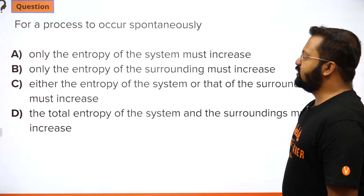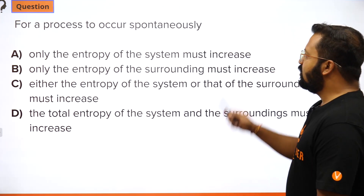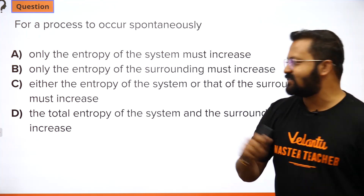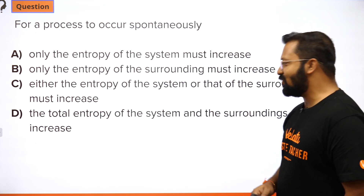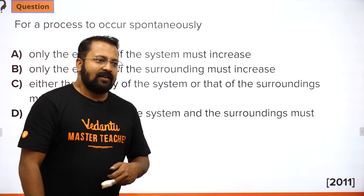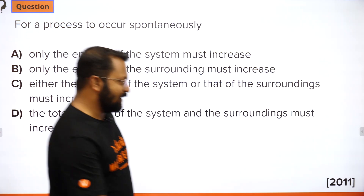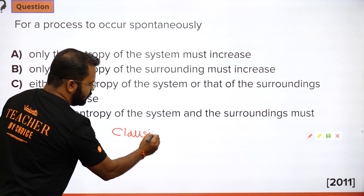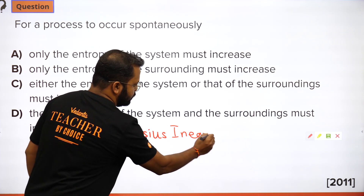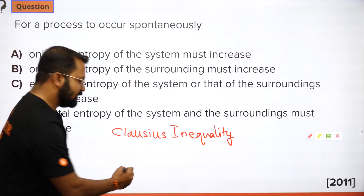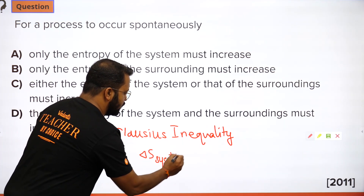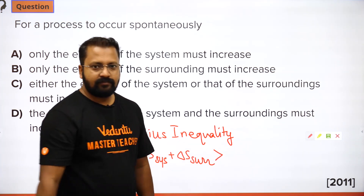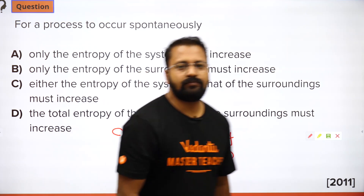Next question — a theoretical one: for a process to occur spontaneously, which condition must be met? Remember the Clausius inequality, which states that ΔS_system + ΔS_surrounding > 0. This is the fundamental condition for spontaneity.